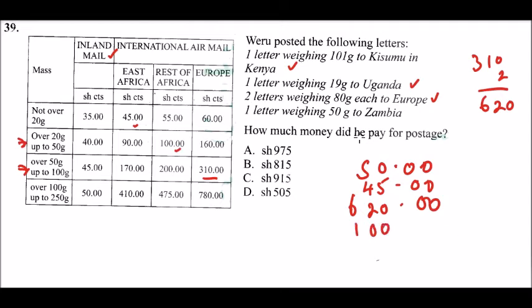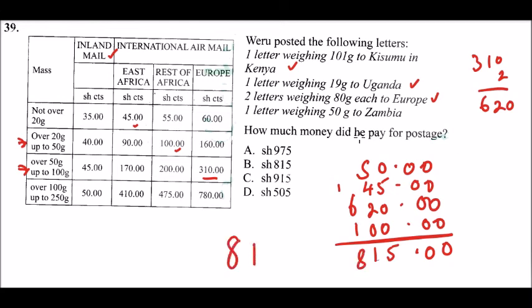Now we add all the amounts together: 50 plus 45 plus 620 plus 100. We get 815 shillings in total. If you check your answer, you find it is option B. The correct answer is B.